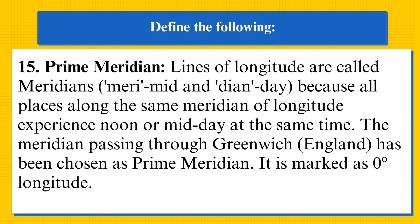Prime meridian: lines of longitude are called meridians. 'Meri' means mid, and 'dian' means day, because all places along the same meridian of longitude experience noon or midday at the same time. The meridian passing through Greenwich in England has been chosen as the prime meridian. It is marked as zero degree longitude.